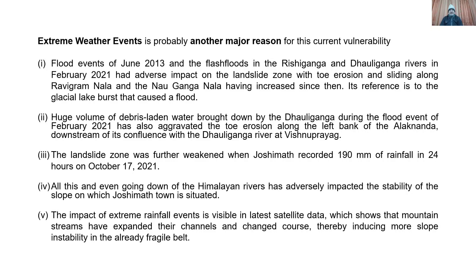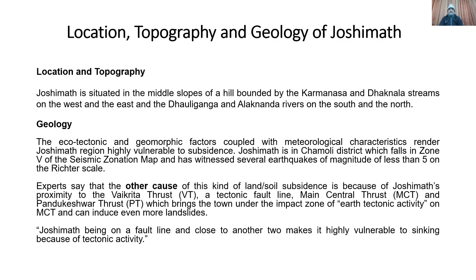The impact of extreme rainfall events is also visible in the latest satellite data, which shows that mountain streams have expanded their channels and changed course, thereby inducing more slope instability in the already fragile belt. Joshimat is situated in the middle slopes of a hill bounded by the Karam Nasa and Dhak Nala streams on the west and east, and the Dhauliganga and Alaknanda rivers on the south and north. Its geotectonic and geomorphic factors, coupled with meteorological characteristics, render the Joshimat region highly vulnerable to subsidence.